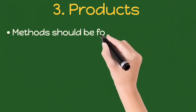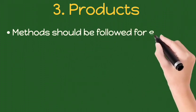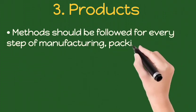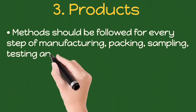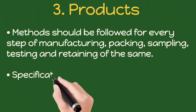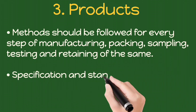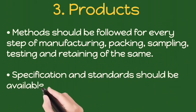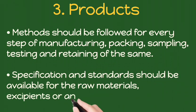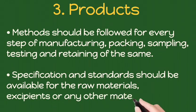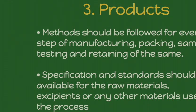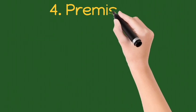Products: 1. Methods should be followed for every step of manufacturing, packing, sampling, testing, and retaining of the same. 2. Specifications and standards should be available for raw materials, excipients, or any other materials used in the process.